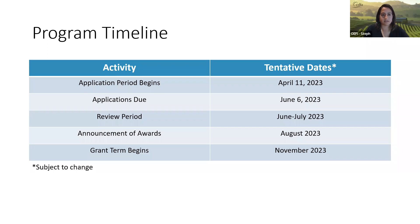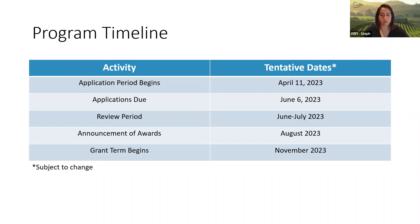Here is our tentative timeline: the application period began last week, applications are due June 6th of this year. We will have a short review period taking place between June and July, and we are hoping to announce awards in August of 2023. We're hoping the grant term will begin in fall of 2023, specifically in November.